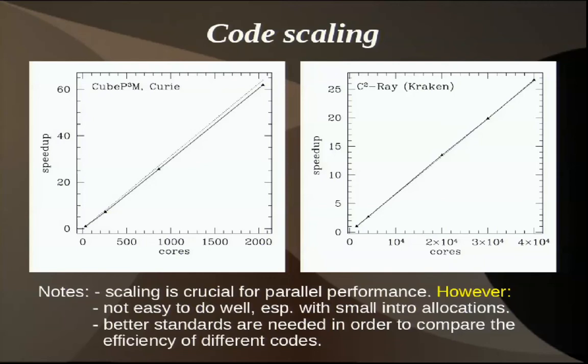Several things to note and discuss. It's very difficult to do scaling tests, because when applying for a proposal you're asked to show your scaling, but they give you only 50,000 core hours — so you can't even run 20,000 cores, let alone scale to that. Also, what is the standard? We saw many scaling plots already and none looked anything like the others. We probably need a common standard to define what good scaling means and how to compare one machine to another.